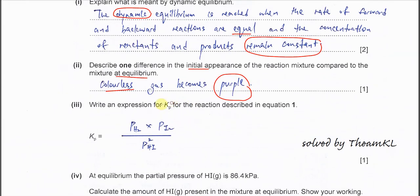Write an expression for Kp, the constant with pressure. We must give an expression with partial pressures of the reactants and products. It's always products over reactant. You just use the partial pressure of H2 times partial pressure of I2 over partial pressure of HI squared.